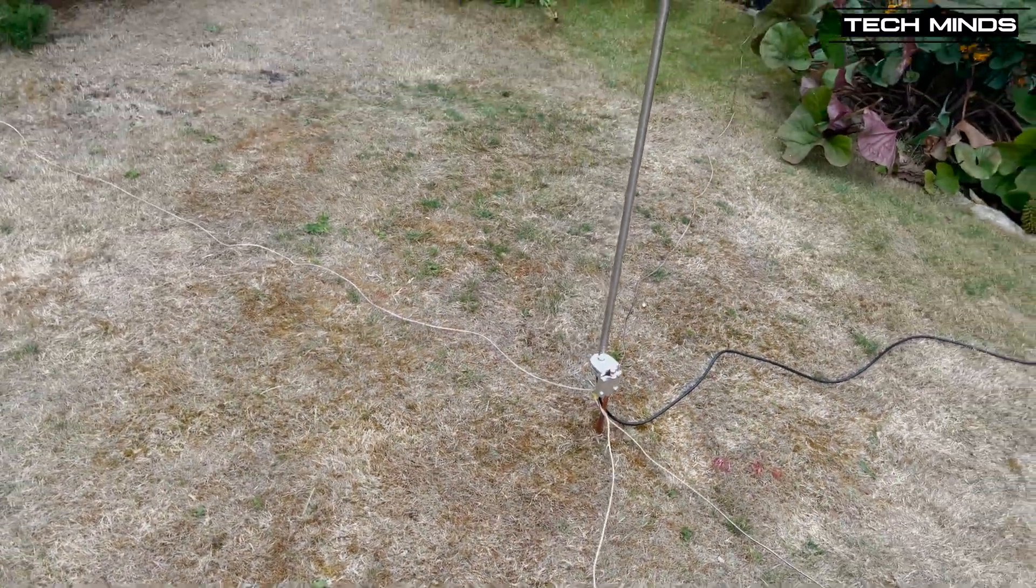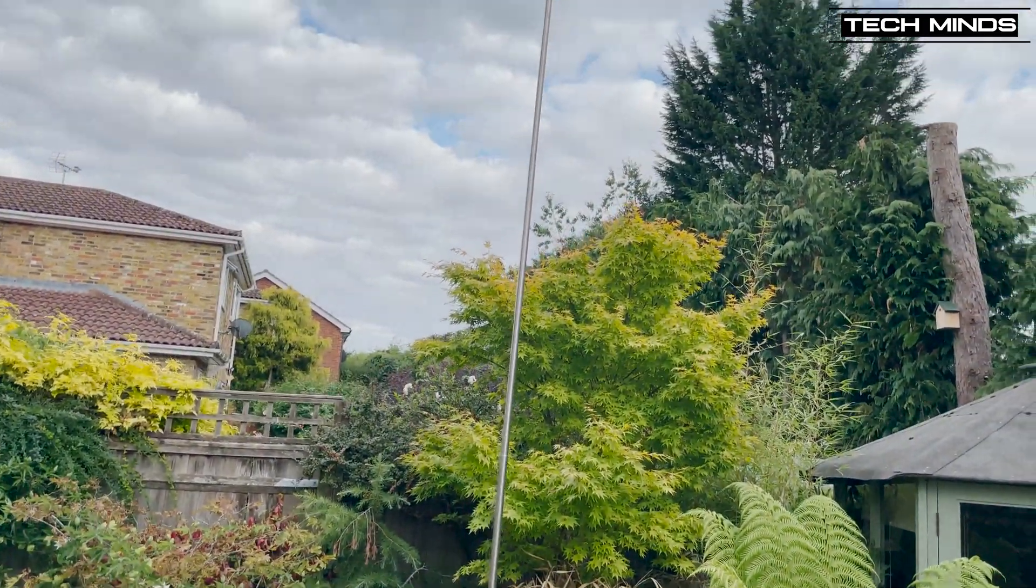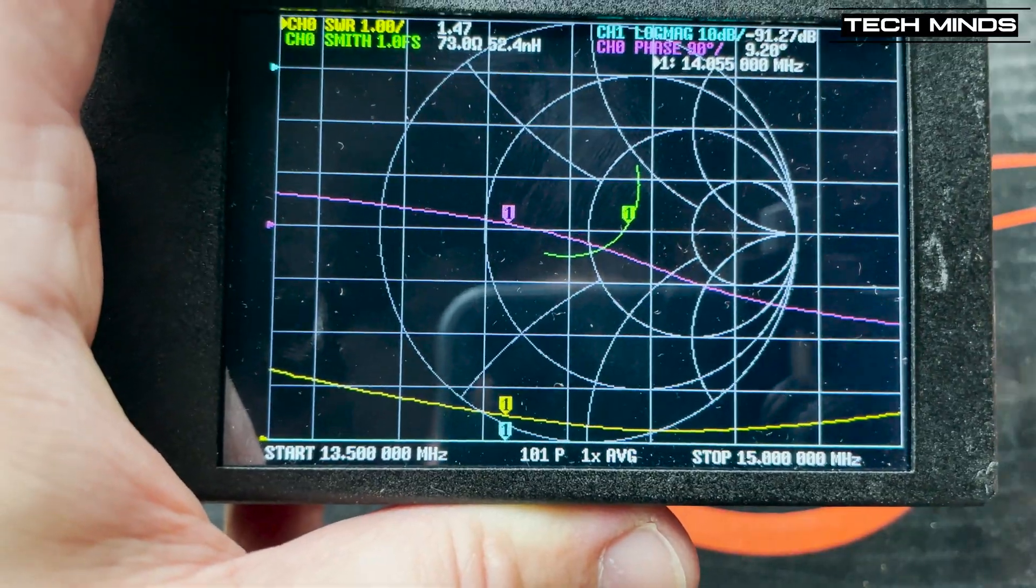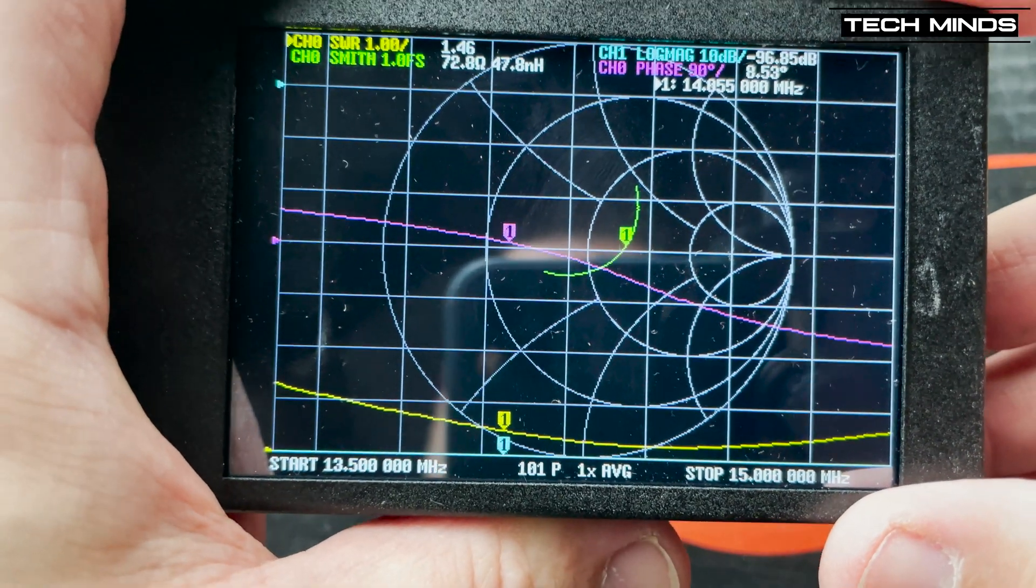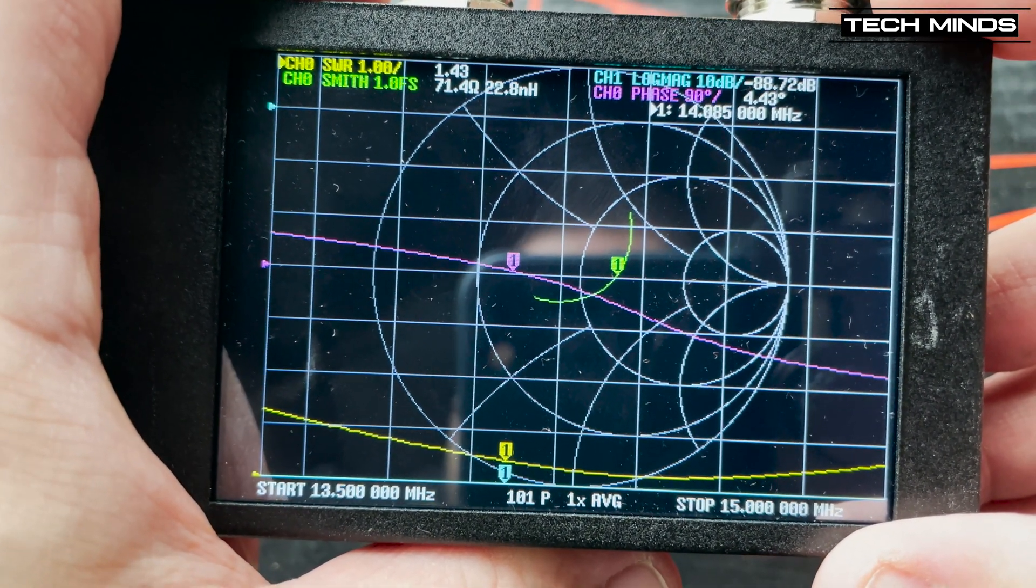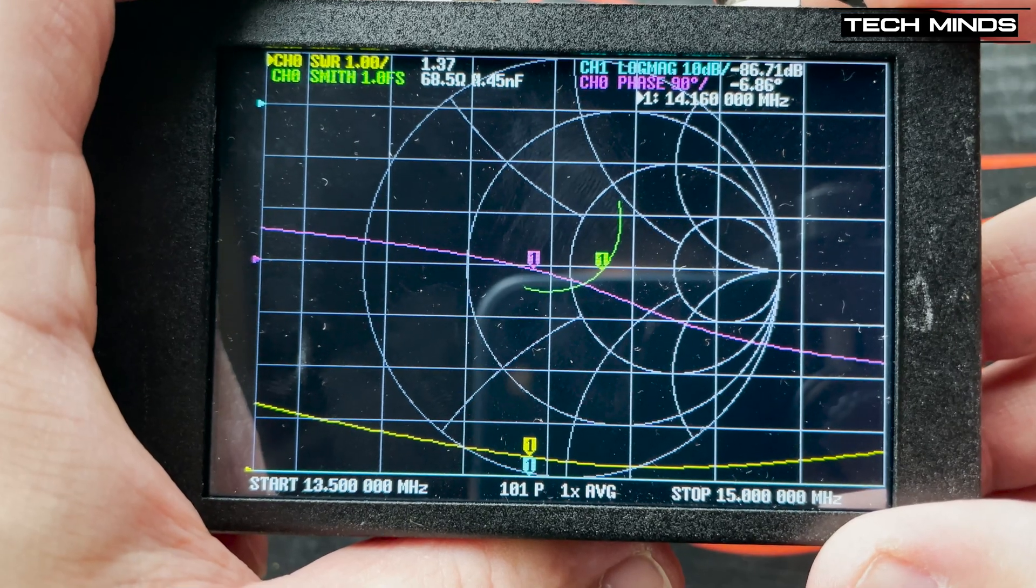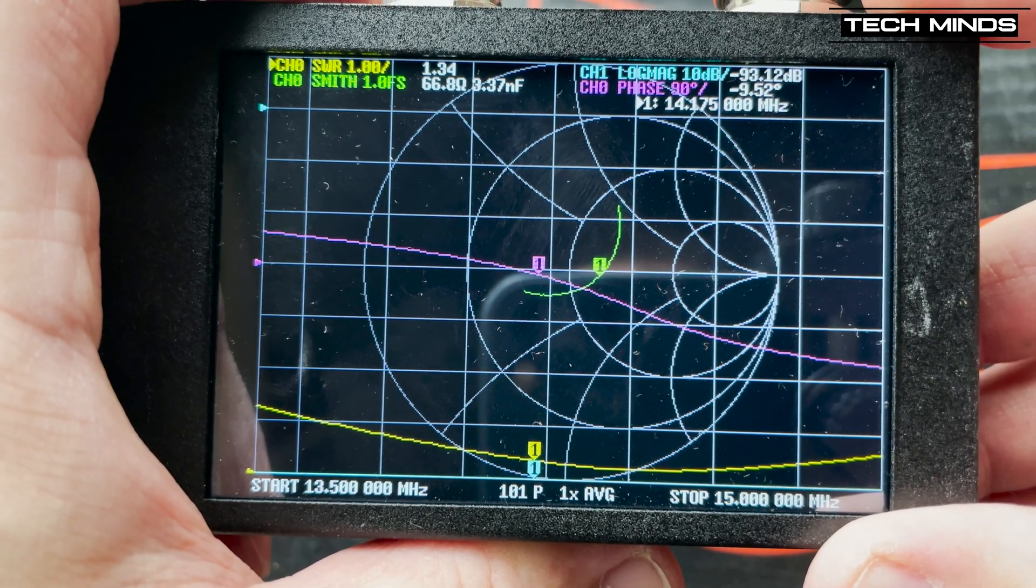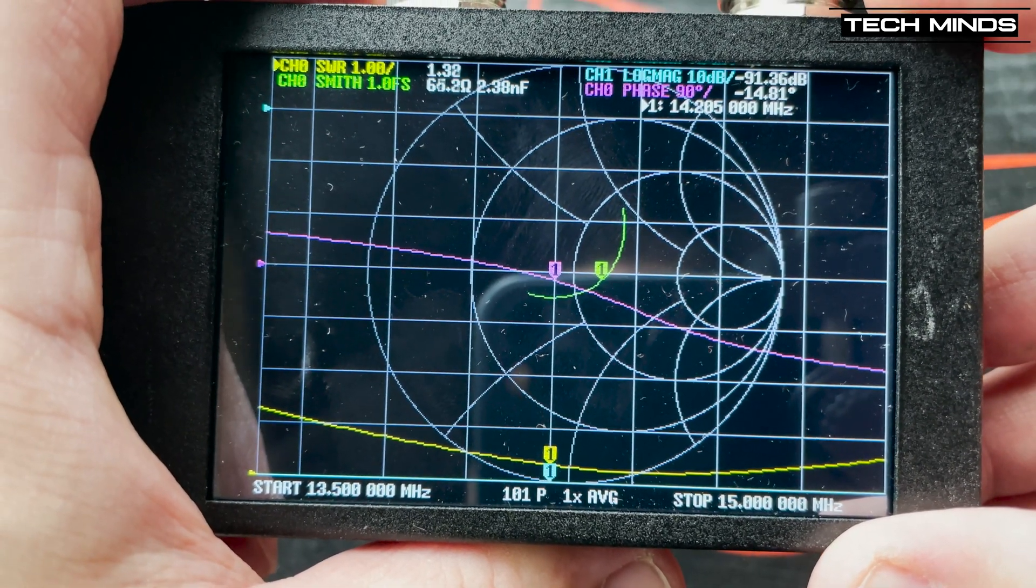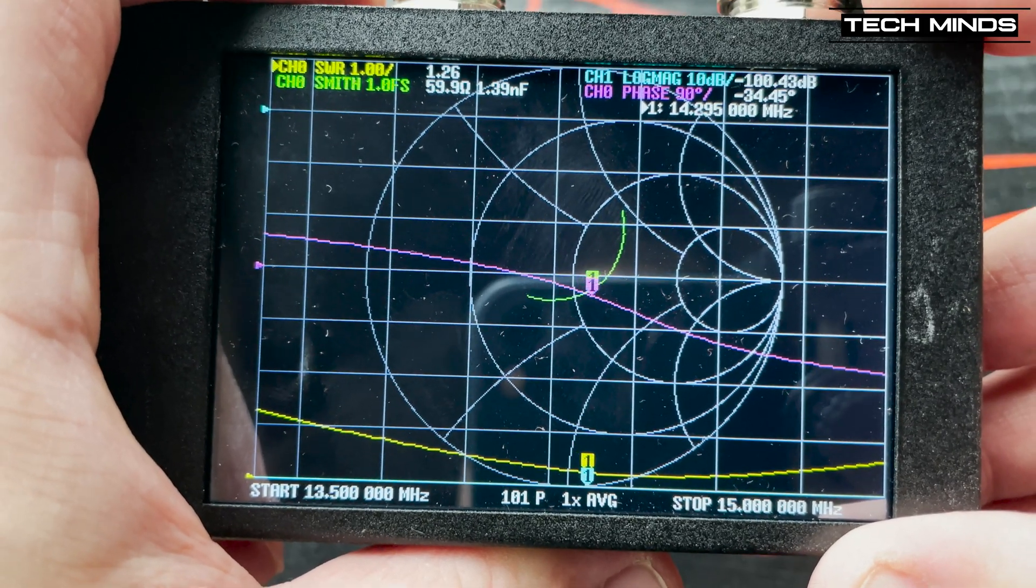With the antenna all set up, it's now time to check the SWR using my VNA. This VNA is awesome and I'll leave a link in the description if you want to check it out. As we can see here, and to my surprisement, 20m has a lovely low SWR across the entire band. In fact, I was quite surprised at the available bandwidth.